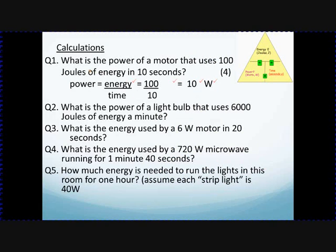Here's a quick example: if a motor uses 100 joules of energy in 10 seconds, we do power equals energy divided by time. The energy is 100 joules and the time is 10 seconds — make sure time is in seconds. So 100 divided by 10 equals 10, and don't forget the units: watts.